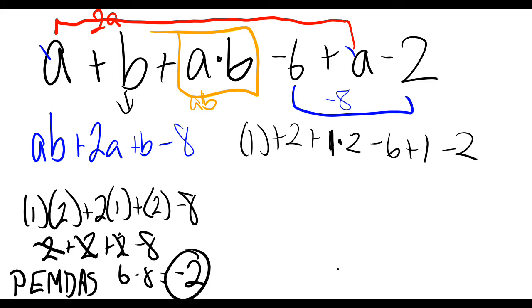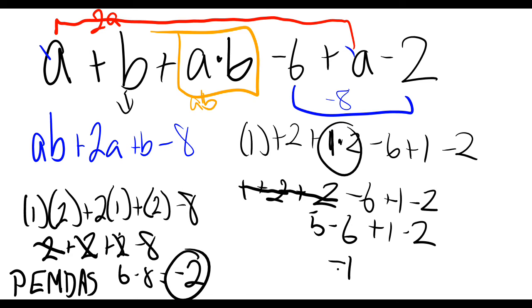Okay, we have 1 times 2 here, so that's 2. All right, 1 plus 2 is 3, plus 2 more is 5, minus 6. 5 minus 6 is negative 1, plus 1 is 0, minus 2. We get our negative 2. 0 minus 2 will be negative 2.